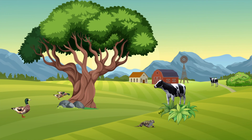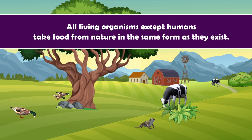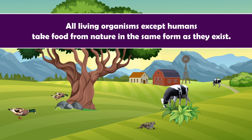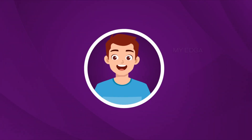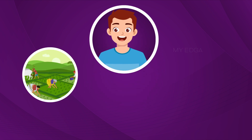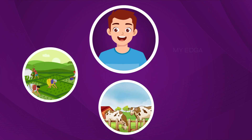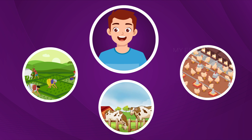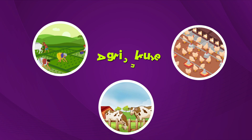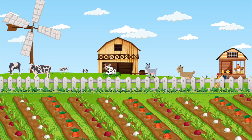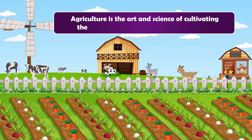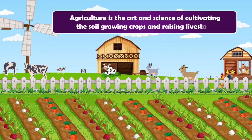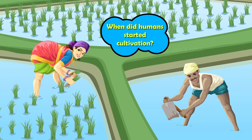All living organisms except humans take food from nature in the same form as it exists. But humans are different — we cultivate plants and also rear animals or livestock for food. This process is known as agriculture. Agriculture is the art and science of cultivating the soil, growing crops, and raising livestock.